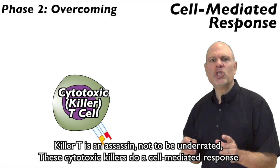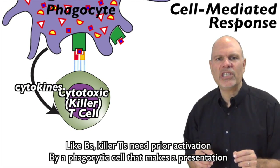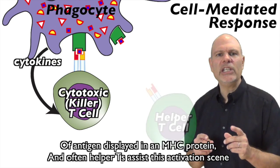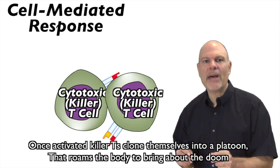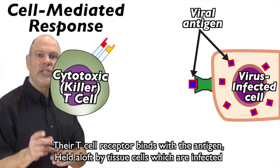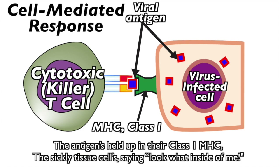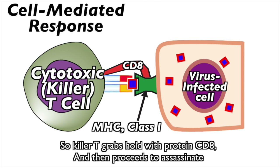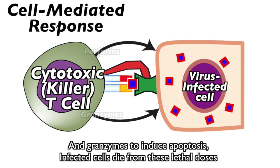Killer T is an assassin not to be underrated — cytotoxic killers do a cell-mediated response. Like B-cells, killer T's need prior activation by a phagocytic cell that makes a presentation of antigen displayed in an MHC protein — helper T's assist in its activation scene. Once activated, killer T's clone themselves into a platoon that roams the body to bring about the doom of body cells with cancer or an infection. Their T-cell receptor binds with the antigen held aloft by infected tissue cells — the antigens held up in their class 1 MHC. The sickly tissue cells say 'Look what's inside of me.' Killer T grabs hold using protein CD8, then proceeds to assassinate the infected cell — a mercy killing using perforins for membrane drilling and granzymes to induce apoptosis. Infected cells die from these lethal doses.